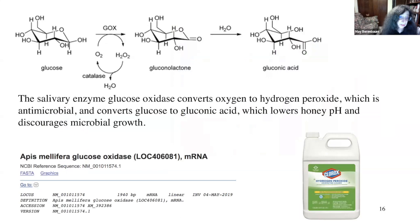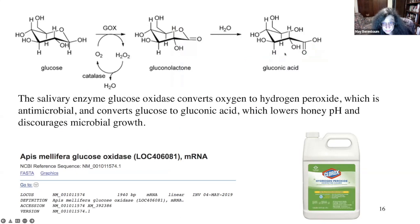Another salivary enzyme, glucose oxidase, converts oxygen to hydrogen peroxide, which is antimicrobial and kills bacteria and other microbes. In the process, it also converts glucose into gluconic acid. This is acidic, so the production of gluconic acid lowers pH, which further discourages microbial growth. Virtually all of the biochemical processing makes honey a very difficult place for microbes to establish, which makes it storable.